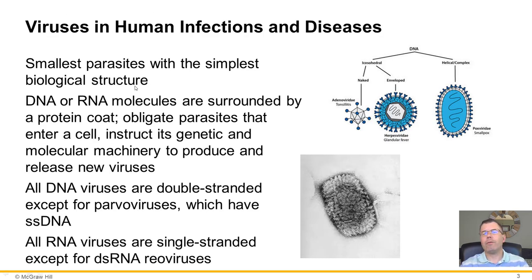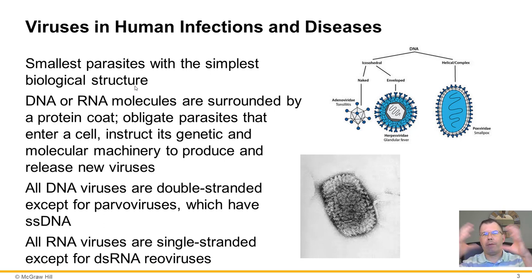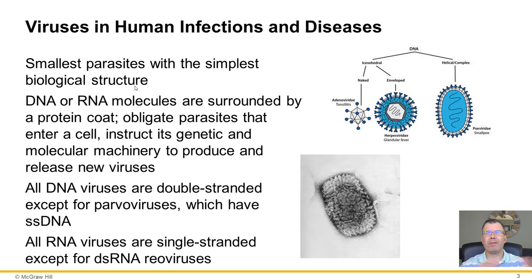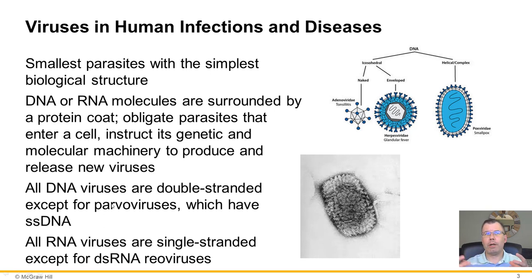Viruses are the smallest parasites out there besides prions. They have DNA or RNA cores, a capsid that surrounds them, and some have an envelope while others don't. Remember: all DNA viruses are double-stranded — the only exception is the parvovirus.